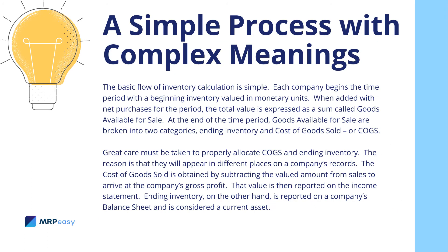The basic flow of inventory calculation is simple. Each company begins the time period with a beginning inventory valued in monetary units. When added with net purchases for the period, the total value is expressed as a sum called goods available for sale. At the end of the time period, goods available for sale are broken into two categories: ending inventory and cost of goods sold, or COGS.